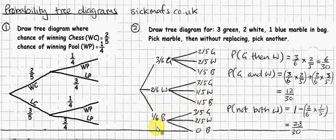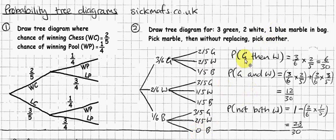Looking at this zero: the chance of getting a blue then a blue is zero, because you do 1/6 times zero. And that should be totally right, because it's impossible to get two blue marbles when there's only one blue marble in the bag.